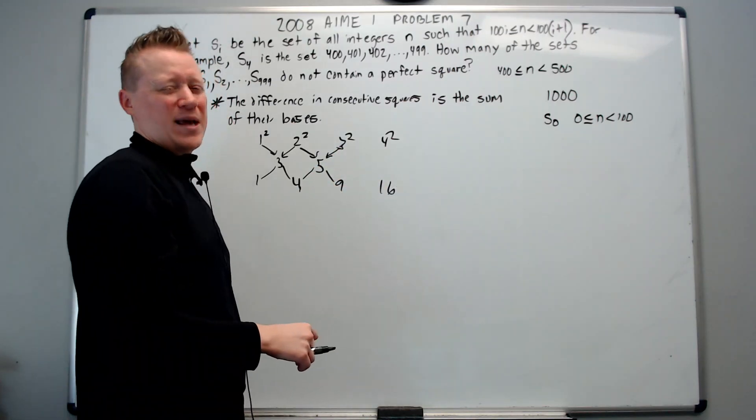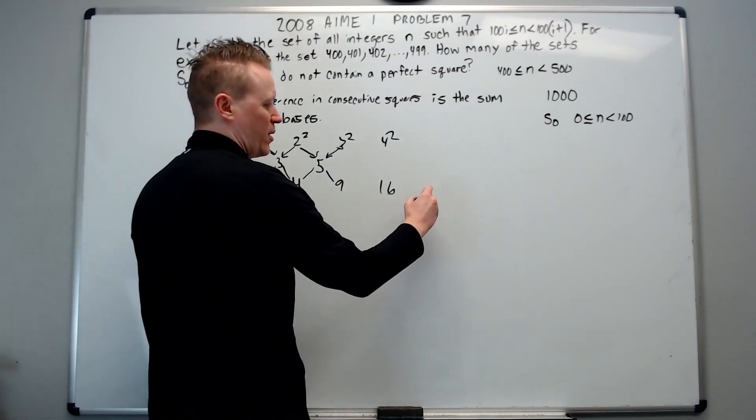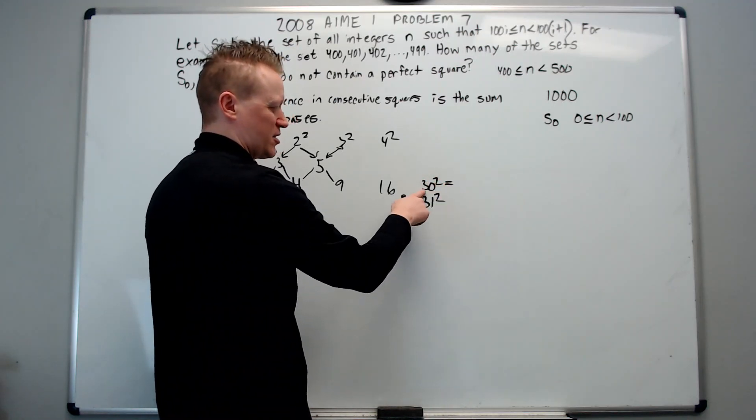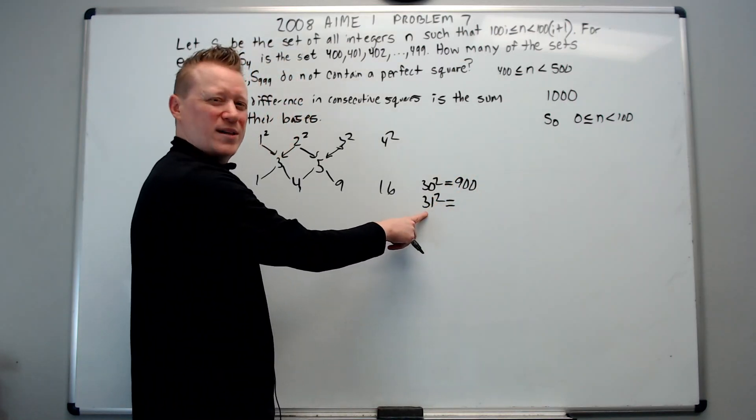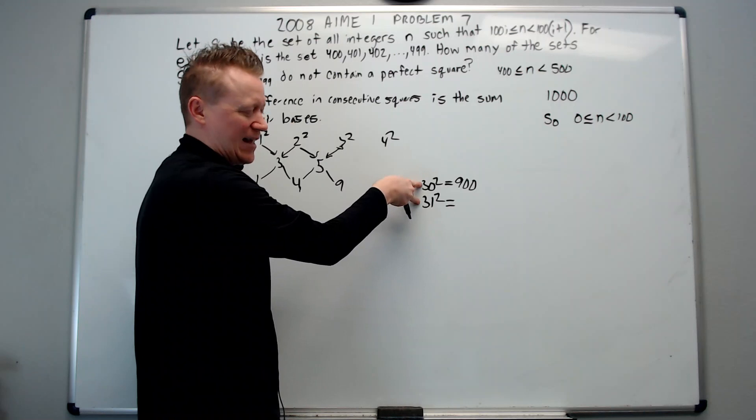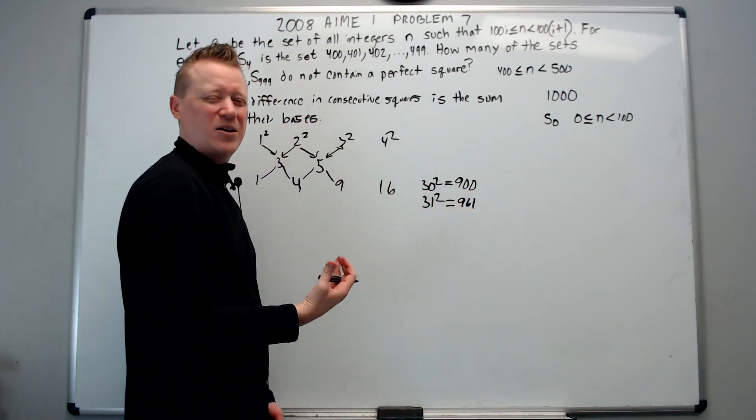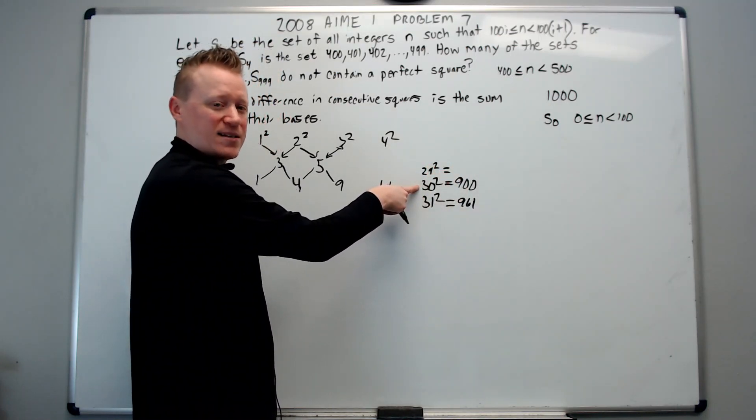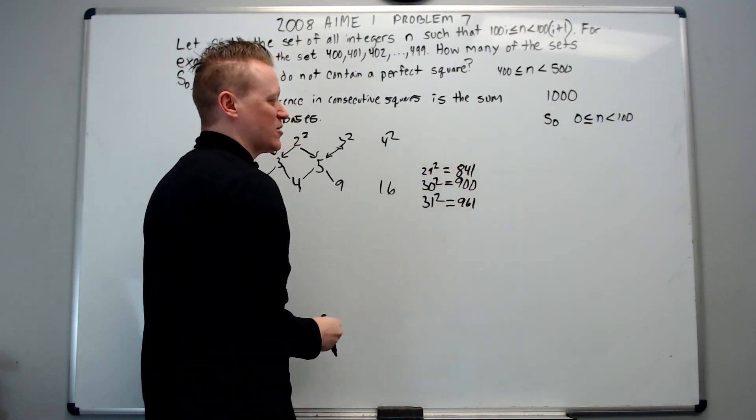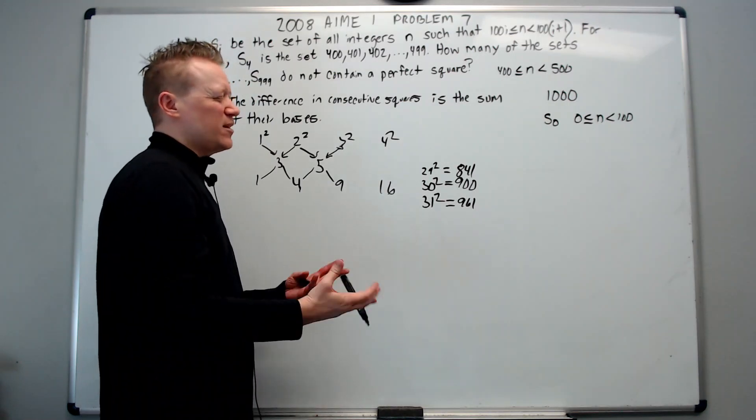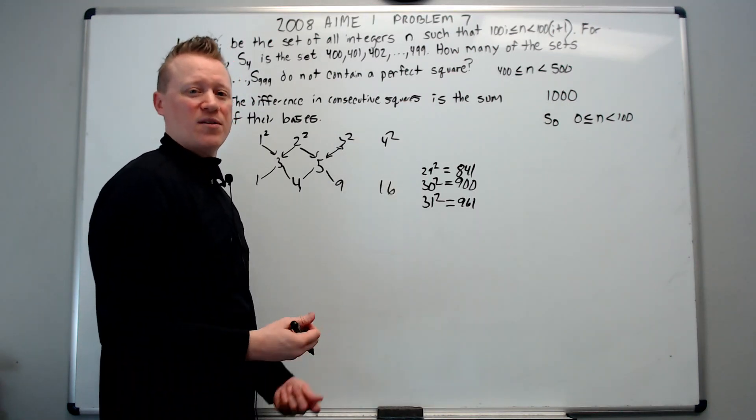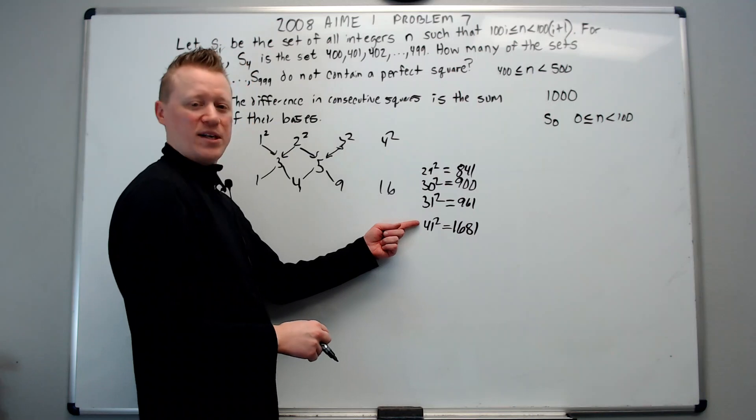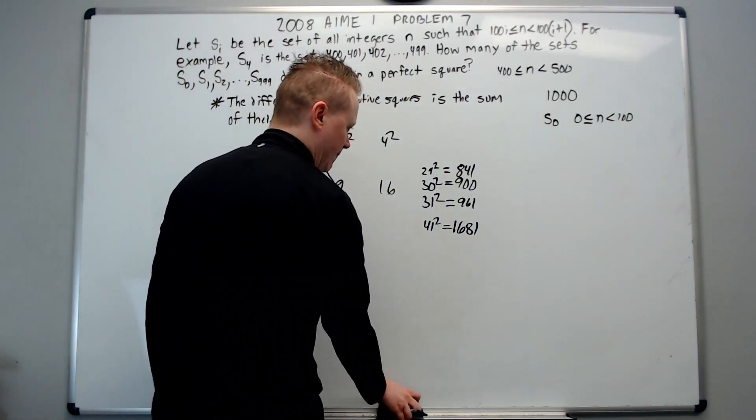This comes in really handy when we have to calculate perfect squares that we might not know. For example, we might not know 31 squared. But we probably all know 30 squared, because it's pretty simple. You just square the 3 and add two zeros. It's 900. So for 31 squared, I just think of 900 and add these two to get 961 with relative ease. The same thing can be done going backwards. So this is 59 as the sum of these bases. I subtract 59 to get that 29 squared is 841. So it's really useful for things that are right near a perfect square that we know. So again, like 41 squared would be 1681, because it's just 40 squared plus 81.